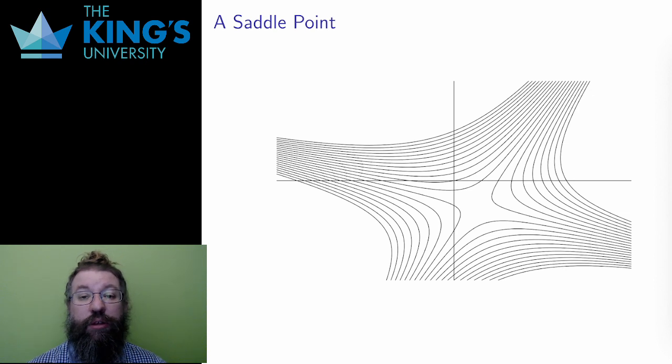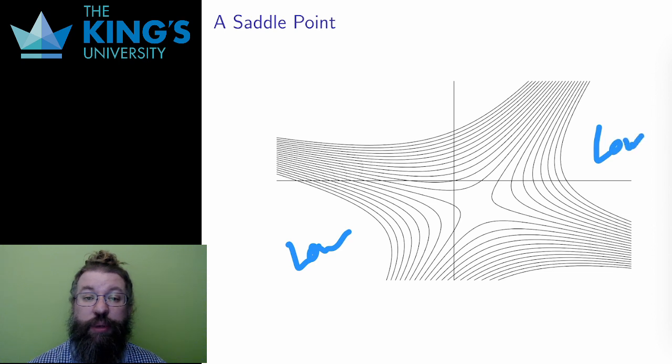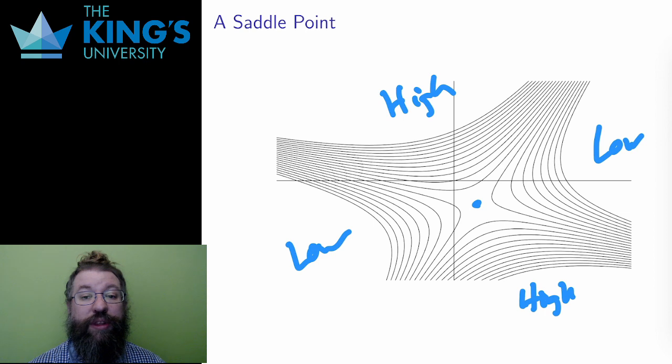Now let me consider a scalar field in only two variables. When I talked about contour plots, I introduced the idea of a saddle point. Here is that same contour plot. This was a saddle point because there are lower regions on the left and the right, and higher regions above and below. In the middle of this diagram, there was a special point, a point that is the highest point between the low areas and the lowest point between the high areas.